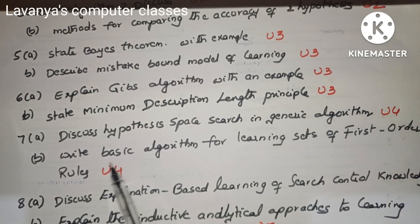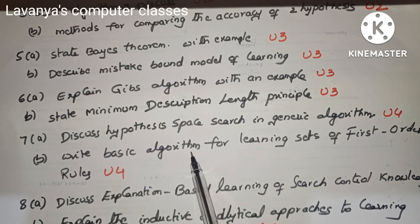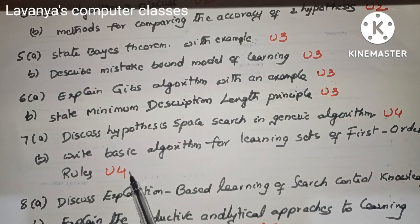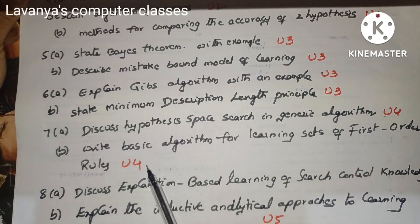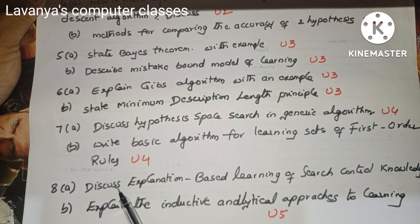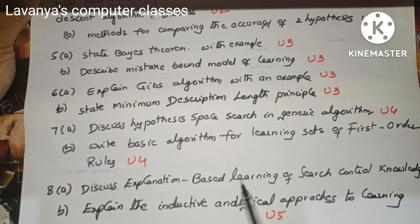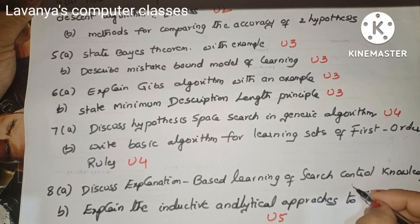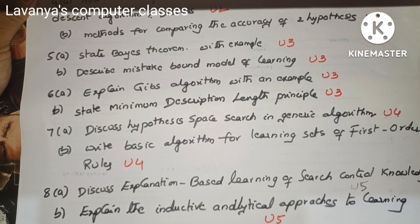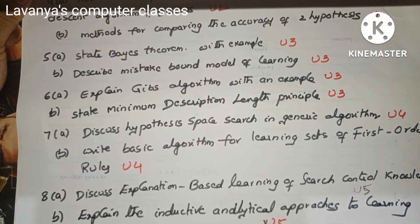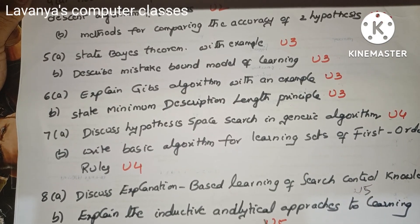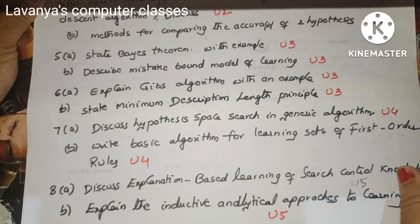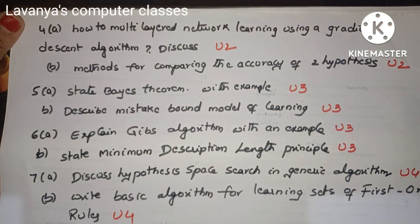Question 7(a) is 'Discuss hypothesis space search in a genetic algorithm' — from Unit 4. Question 7(b) is 'Write the basic algorithm for learning sets of first-order rules' — also from Unit 4. Question 8(a) is 'Discuss explanation-based learning of search control knowledge' — from Unit 5. Question 8(b) is 'Explain the inductive and analytical approaches to learning' — also from Unit 5.